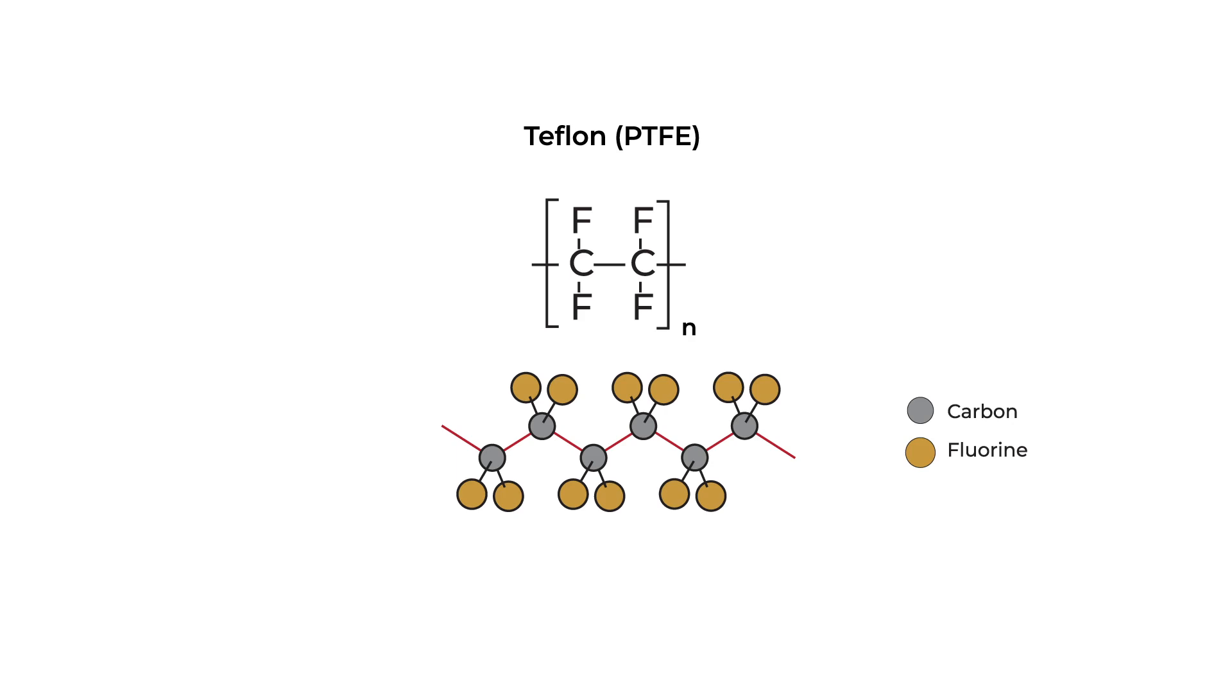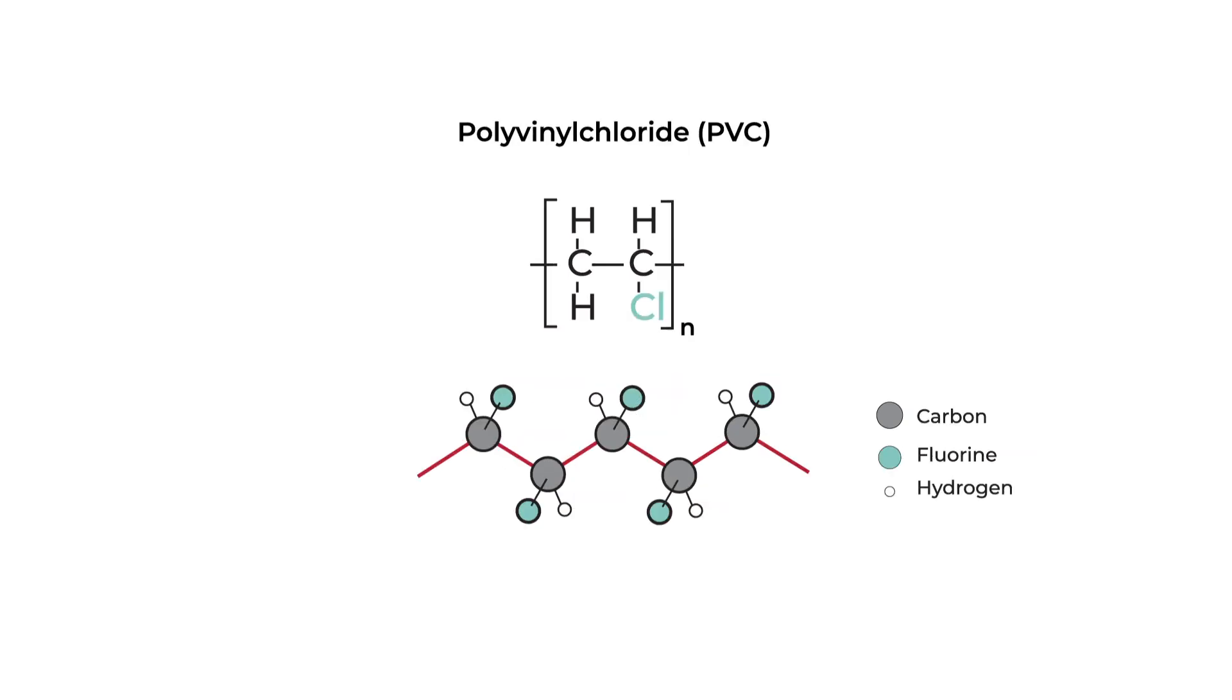Why do we bother showing two carbons? Well, some systems, like polyvinyl chloride or PVC, have uneven side groups. The structure for PVC is shown here. We have three hydrogen side groups and one chlorine side group, per repeat unit.